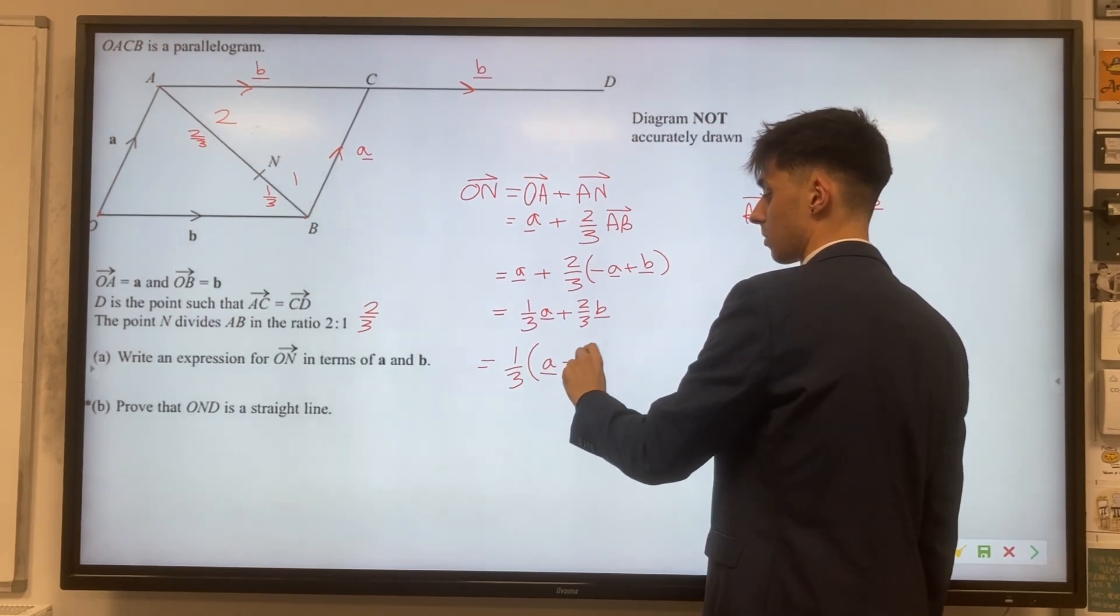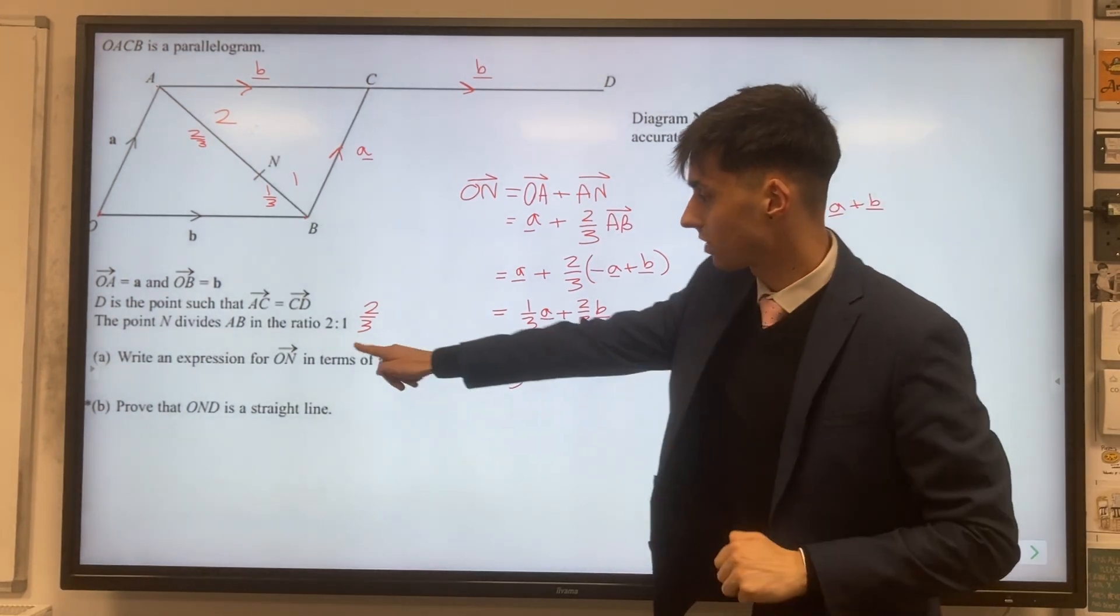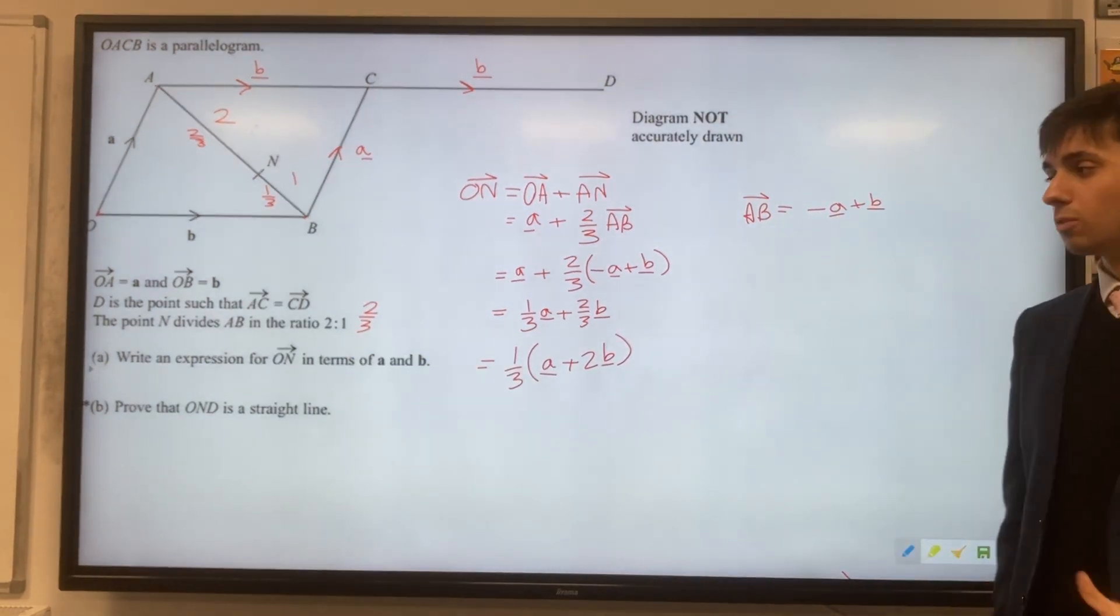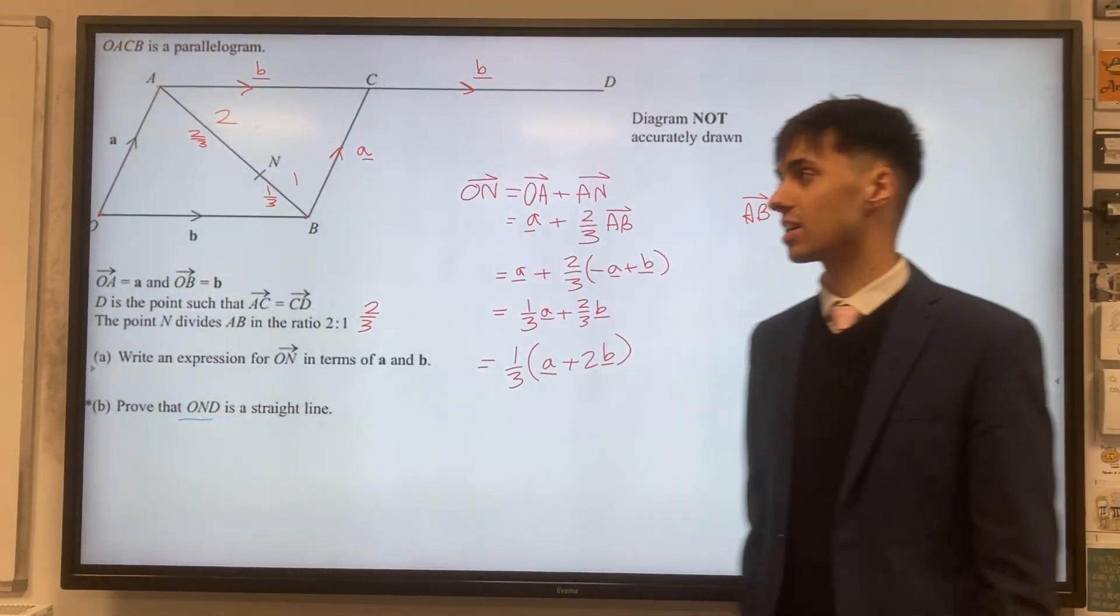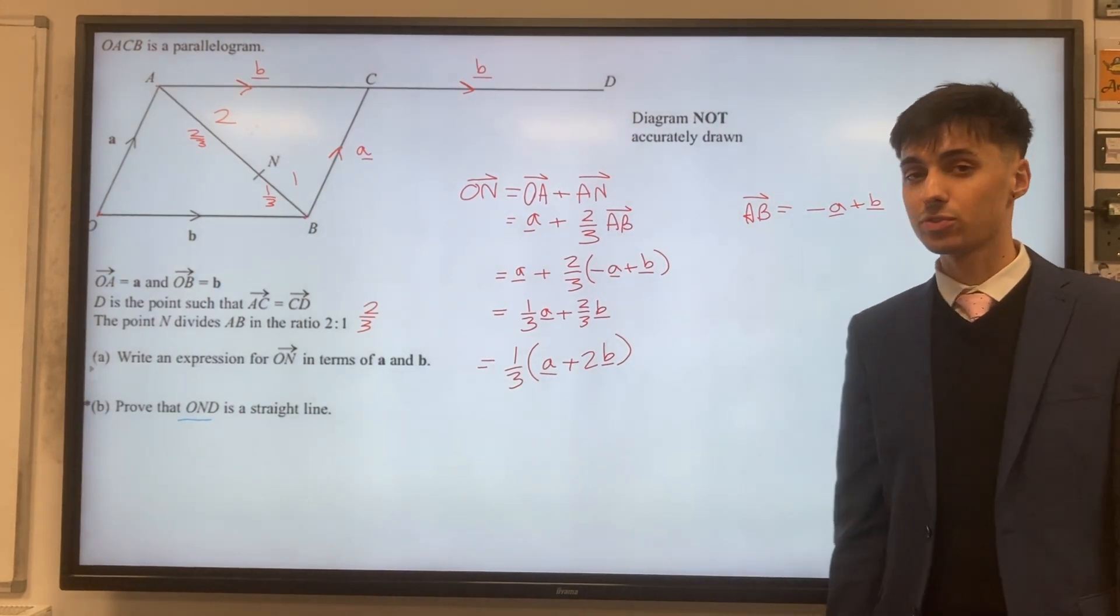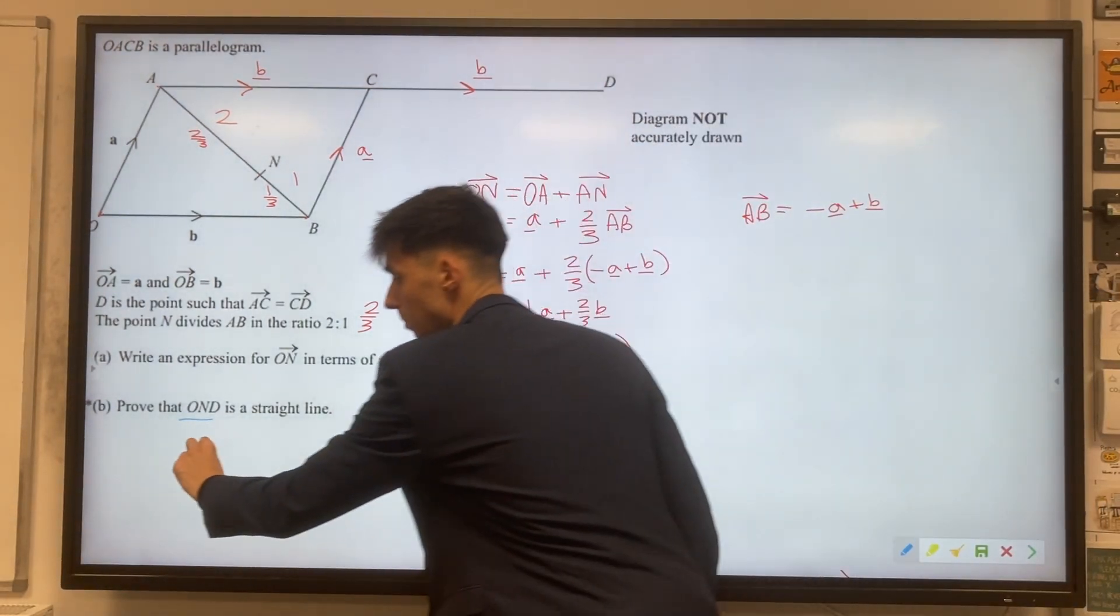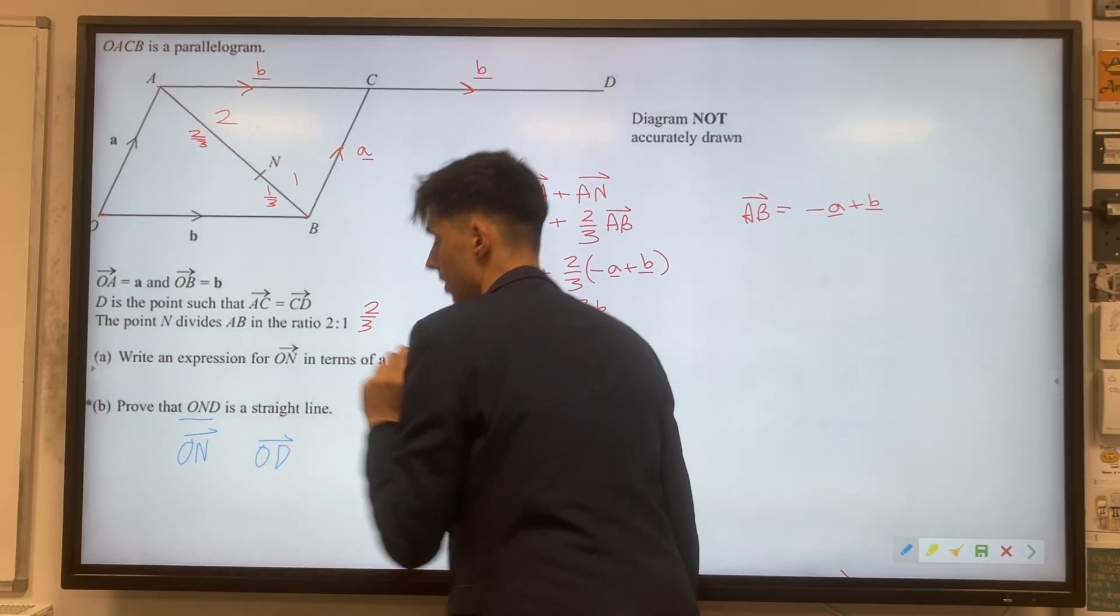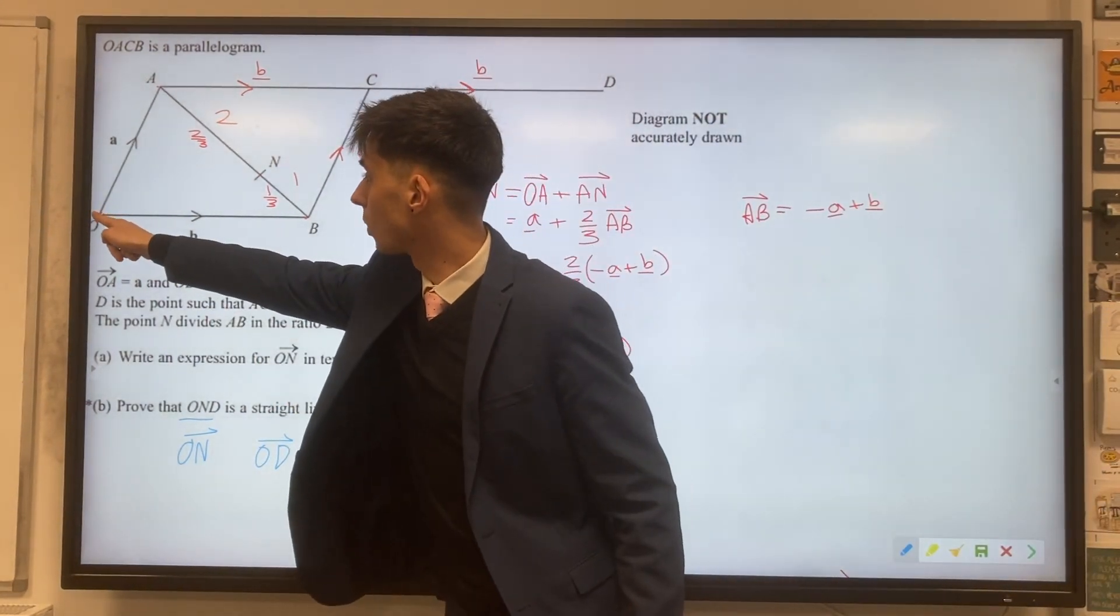So that's part A in this question. For part B, we would like to prove that OND is a straight line. And like all straight line vector proofs, let's think about the parts of this line. So we've got one part of OND, that's ON, and the other part is OD. So we want to look at this smaller part, that's ON.